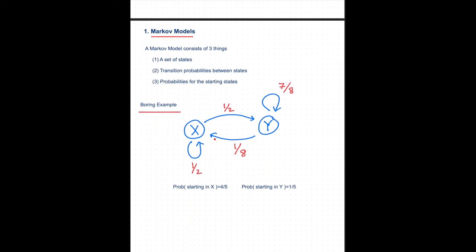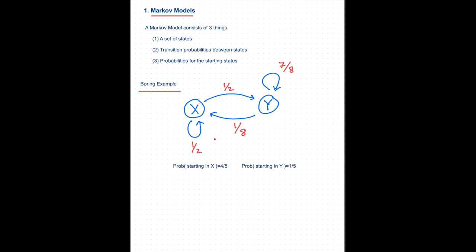A Markov model is really simple — it has three things. It has a set of states; in this case we have state X and state Y. The idea is that you start at any one of these states, and your starting probabilities are part of the model. In this case, I'm going to start in state X with 80% probability and start in state Y with 20% probability. We could think of rolling dice, and depending on the outcome we would start either in X or in Y. We can specify those probabilities — they don't need to be 80/20, they could be all sorts of things.